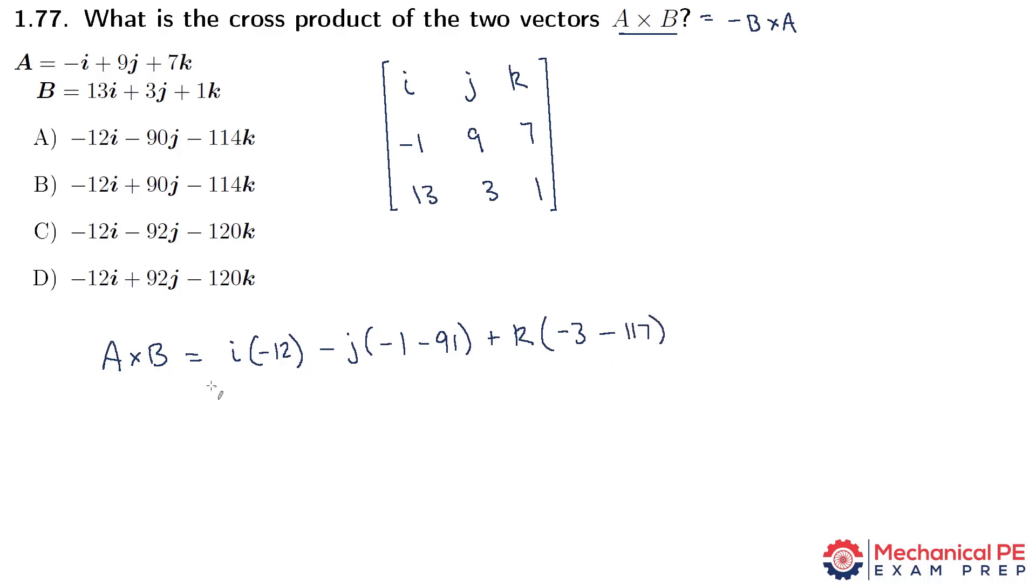And now let's just simplify here. Minus 12 i, and here we're going to have minus 92 times a negative, so it's going to be plus 92 j. And here we have minus 120 k. And that lines up well with answer choice D.